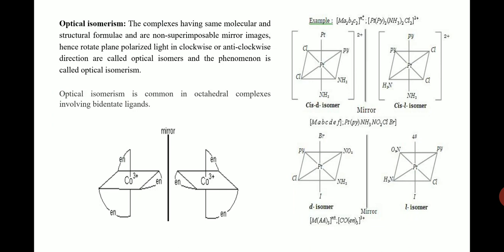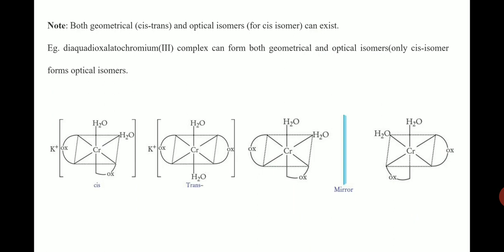Optical isomerism involves complexes having the same molecular and structural formulae that are non-superimposable mirror images of each other. If you rotate them clockwise and anticlockwise, they exhibit optical isomerism, and the phenomenon is called optical isomerism. These complexes are exactly non-superimposable mirror images. For example, the diaqua dioxalato chromium(III) complex can exhibit both geometrical as well as optical isomerism. This concludes the topic of isomerism in metal complexes.